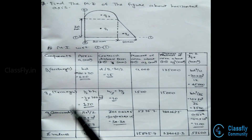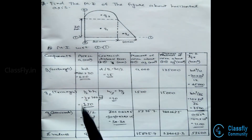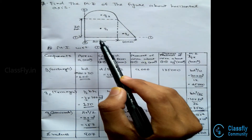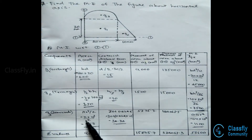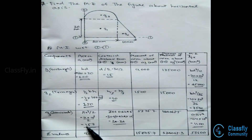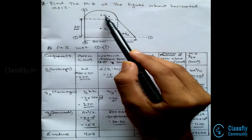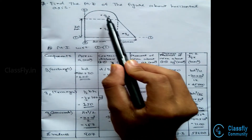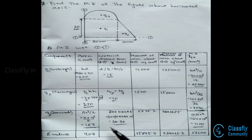For the third component, semicircle G3, the area is given by πr²/2 where the radius is 10 (since the diameter is 20), giving π×10²/2, which equals 157. The centroid distance from 1-1 is 30 plus the centroid distance from the diameter, that is 0.424r, so 30 + 0.424×10, which equals 34.24.